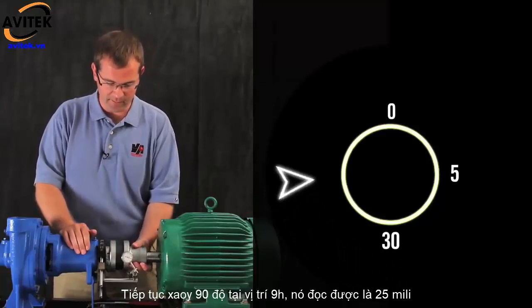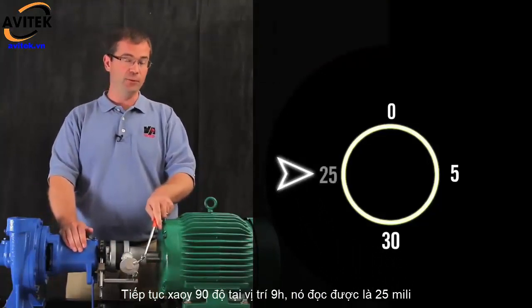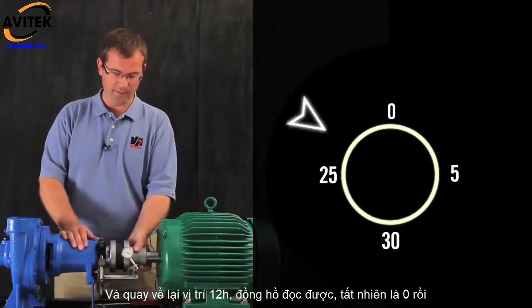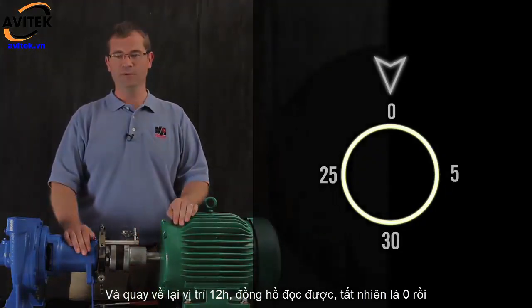Next, we read at 9 o'clock, and that reads 25 mils, and then back to 12 o'clock, and the indicator comes back to zero.